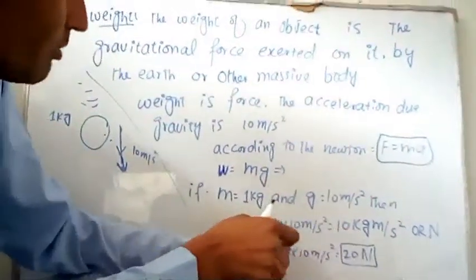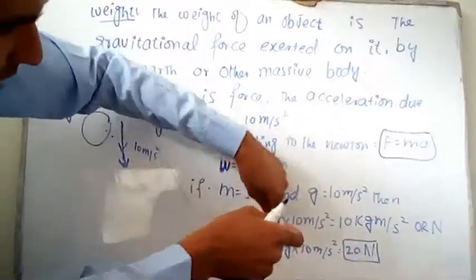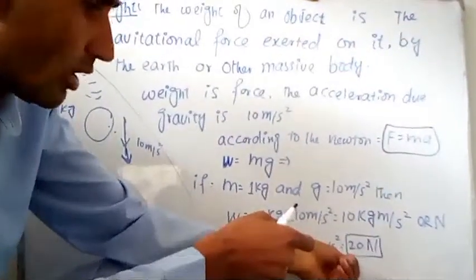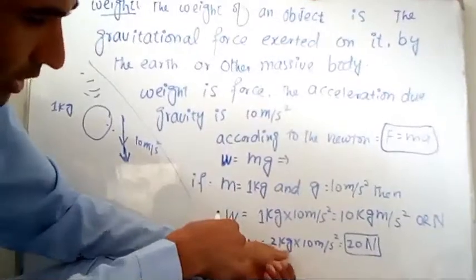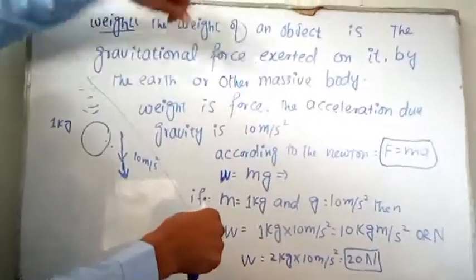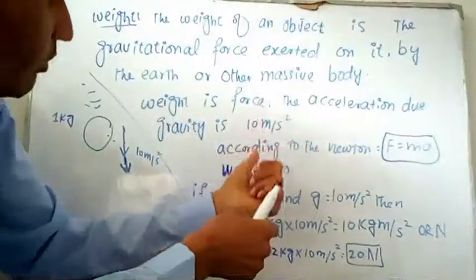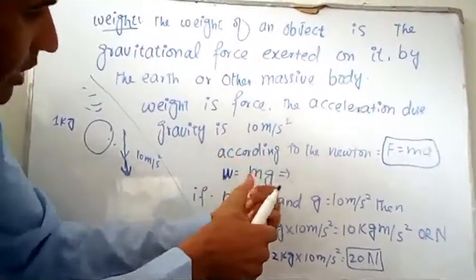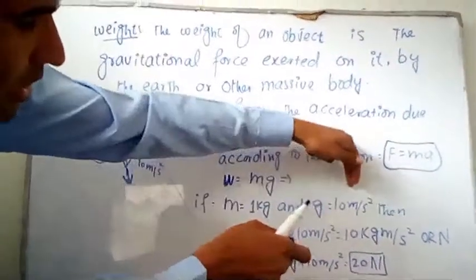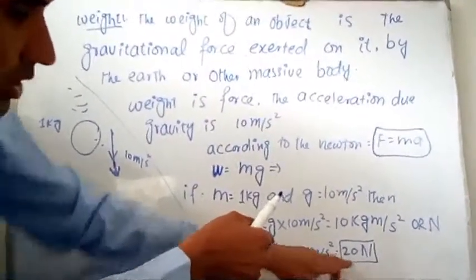The weight of the object is 10 Newtons. If we multiply 2 kg by 10 meters per second squared, the weight will be 20 Newtons. It means that if the mass of the object is increased, the weight is also increased. Mass is only the amount of matter — the particles of matter — but weight is found by multiplying mass by the acceleration due to gravity, which is 10 m/s². Similarly, if the mass is 3 kg, the weight will be 30 Newtons.